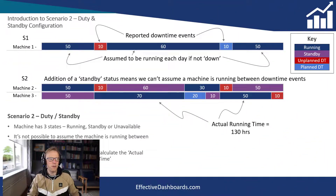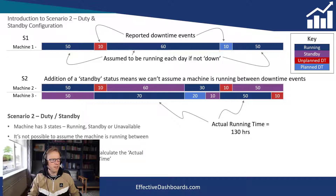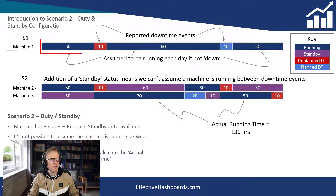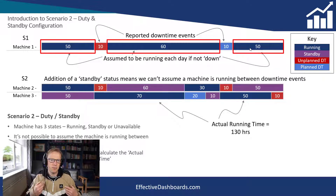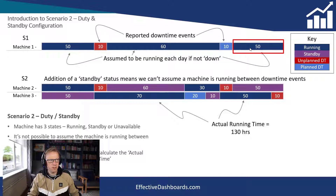This is video three of my series on creating reliability and availability metrics and KPIs in Power BI. In this video we're going to look at what I've called scenario two. We covered scenario one in the previous two videos — you can see a link below. That scenario was essentially where we recorded downtime events, and then filled in the uptime based on the number of days between downtime events and how many hours per day the machines would be running.